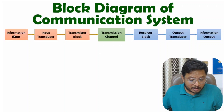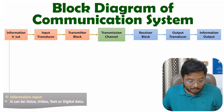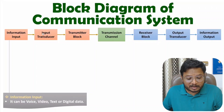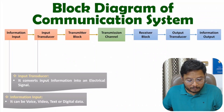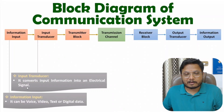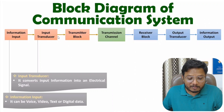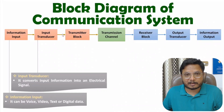The input information can be voice, video, text, or digital data. If we have non-electrical information, the next block will be the input transducer, which converts non-electrical information into an electrical signal. So after the input transducer, we have an electrical signal.